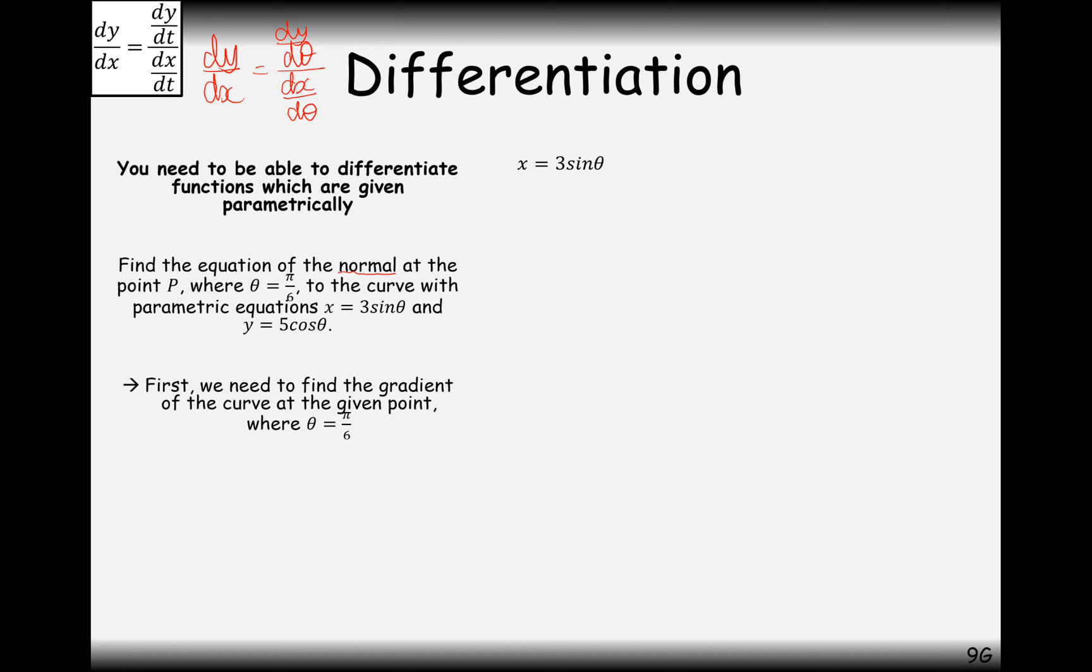So what we're going to need to do first is find the gradient so that we can find then the normal gradient. So, x equals 3 sine theta. Differentiate that and you get 3 cos theta. Take y equals 5 cos theta. Differentiate that and you get minus 5 sine theta.